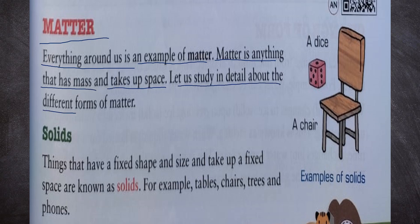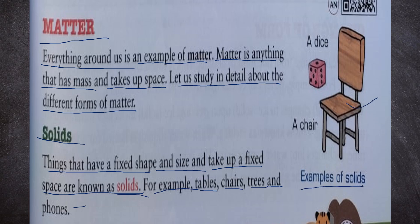Let us study in detail about the different forms of matter. First of all, solids. Things that have a fixed shape and size and take up a fixed space are known as solids. For example, tables, chairs, trees and phones. Examples of solids in this picture are a chair and a dice.